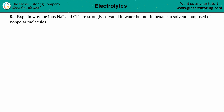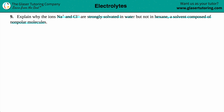Number nine: explain why the ions Na+ and Cl- are strongly solvated in water but not in hexane, which is a solvent composed of nonpolar molecules. So for this question we just have to explain why we have these charges — Na+, Cl-, sodium and chloride — and why they are strongly solvated in water but not in hexane.